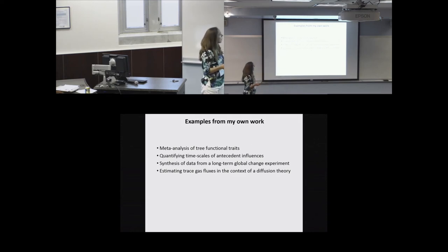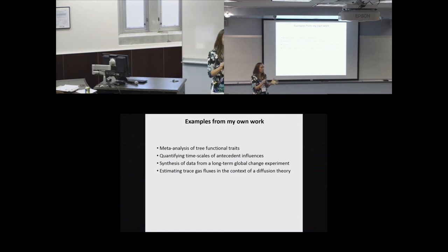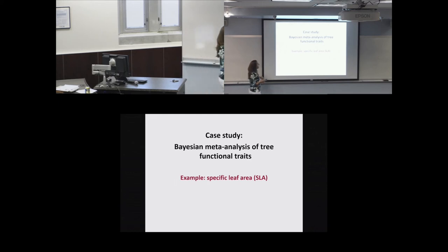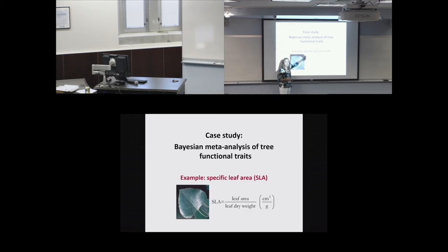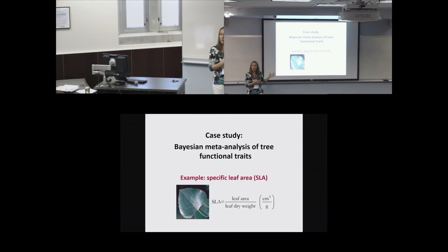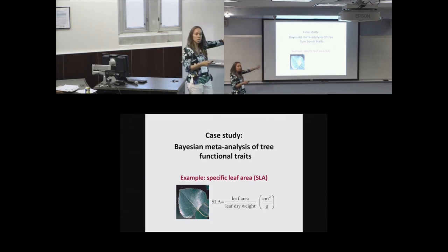The first case study is a Bayesian meta-analysis of tree functional traits, focusing on specific leaf area — SLA. It's a trait that's easy to measure: leaf surface area divided by dry weight. It's related to photosynthesis, herbivore preferences, nitrogen content, and more. My lab has been compiling a huge literature database on tree functional traits including SLA and other traits related to physiology, anatomy, and structure of trees. From that literature we extract sample means, sample variances, sample sizes, and metadata like treatment information, site information, species, and source.